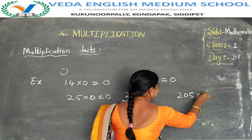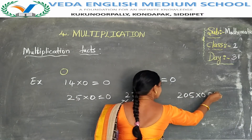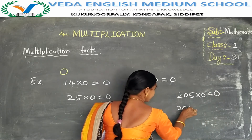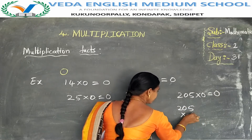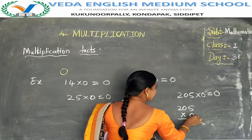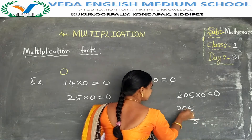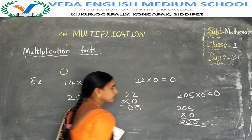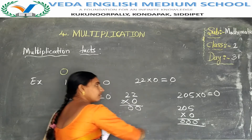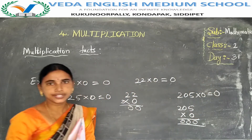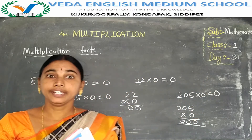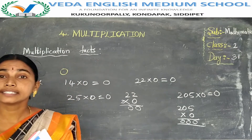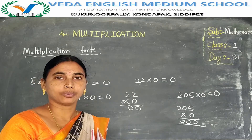205 into 0 is also 0. See: 205 into 0 — 0 fives are 0, 0 zeros are 0, 0 twos are 0. So the answer is always 0. When a number is multiplied by 0, the answer is always 0.